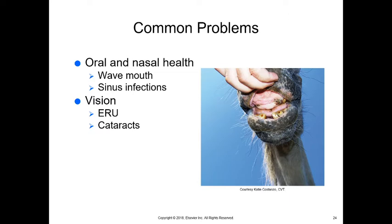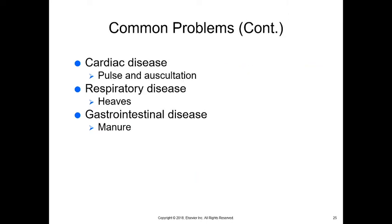Equine recurrent uveitis (ERU) involves recurrent inflammation within the eyeball. It can be genetic or an aging change characterized by increased white cells and protein in the eye. It is sometimes called moon blindness and can cause visual deficits, especially at night, due to excess protein causing cloudiness of vision. Cataracts are also common in older horses. Cardiac disease can be an issue, assessed through pulse and cardiac auscultation.